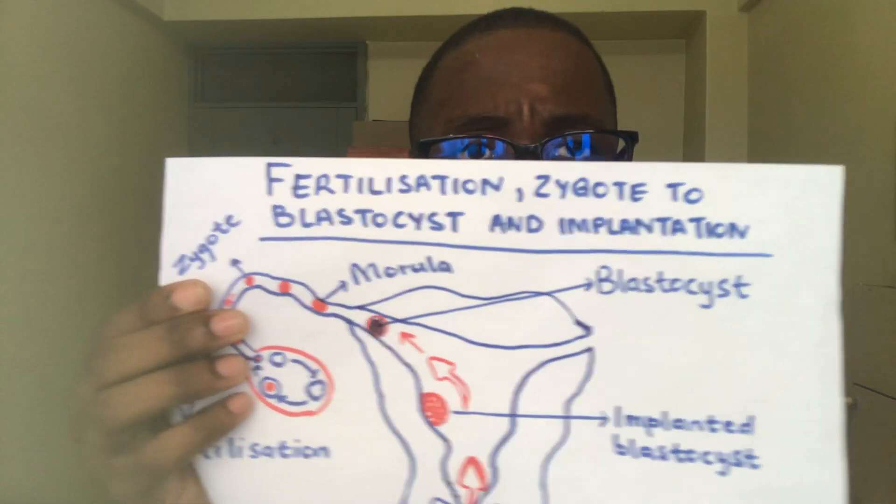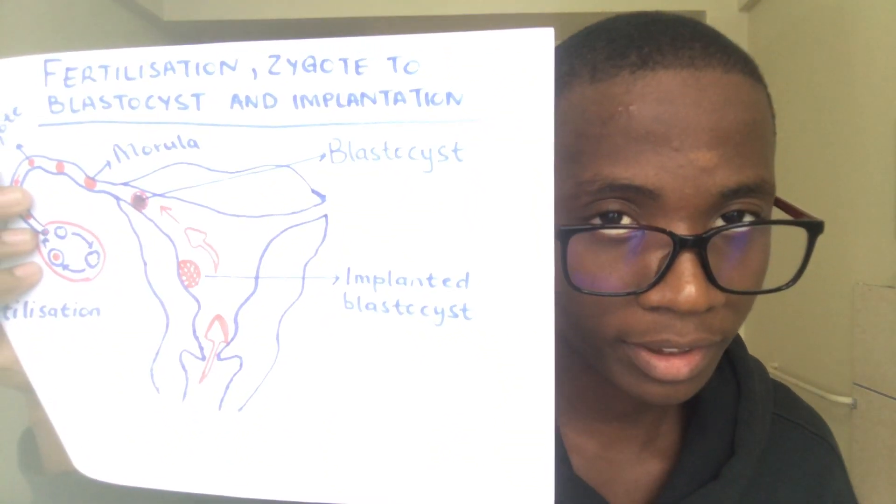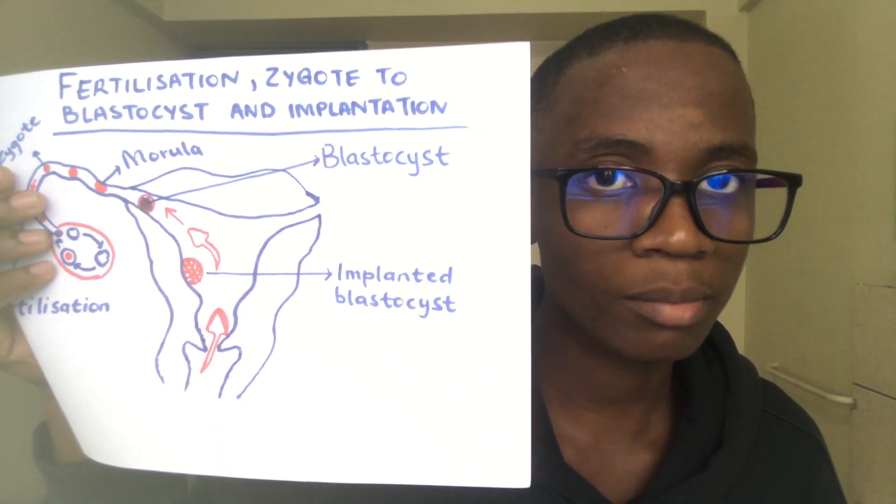Hello everyone, welcome back. Please don't forget to subscribe — just click that red subscribe button for more lesson content. As we did in our last life sciences lesson, I promised I'm going to touch on the negative feedback of FSH as well as progesterone. This lesson will also cover fertilization, the formation of the zygote until it becomes a blastocyst, and its implantation.